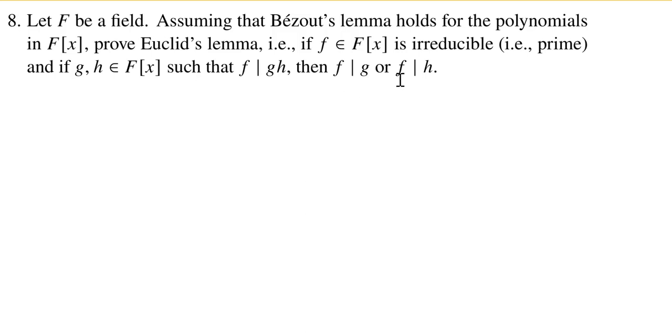So how do we use that f is irreducible? First thing we'll do is assume one of these is false. So let's assume without loss of generality, because whatever we do here if we assume f doesn't divide g and then prove it does divide h, the same proof will work the other way around.